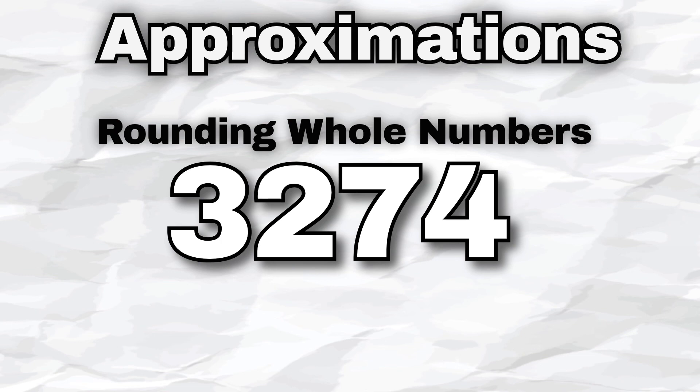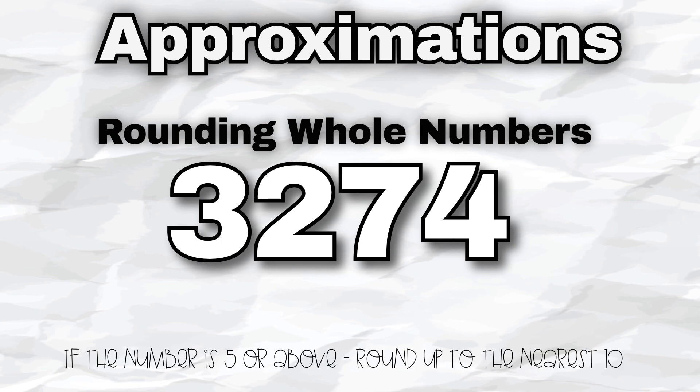To round a whole number, here's what you need to do. Step one: identify the position of the last digit you want to keep. For instance, if you're rounding to the nearest 10, then it's the digit in the 10s column.